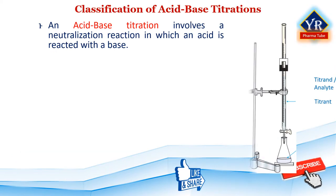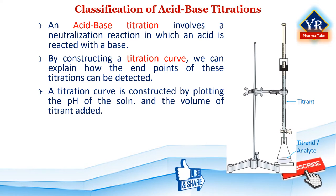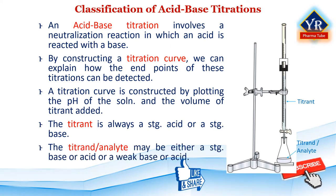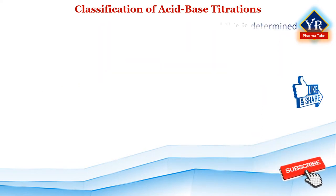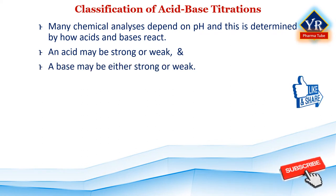An acid-base titration involves a neutralization reaction in which an acid is reacted with an equivalent amount of base. By constructing a titration curve, we can easily explain how the endpoints of these titrations can be detected. The endpoint signals the completion of the reaction. A titration curve is constructed by plotting the pH of the solution as a function of the volume of titrant added. The titrant is always a strong acid or a strong base, while the analyte may be either a strong or weak base or acid.